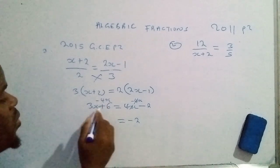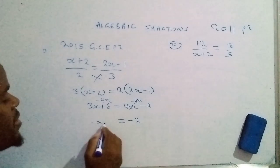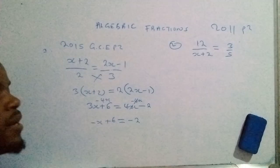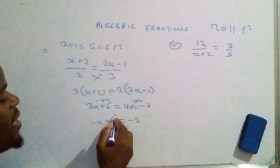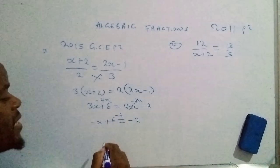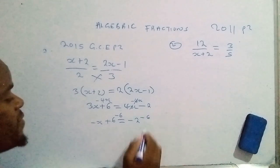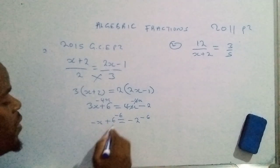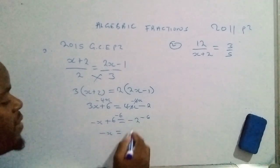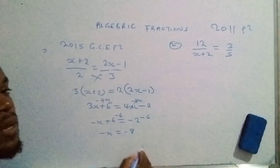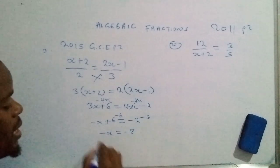This one will give us 3x minus 4x, that's negative x plus 6. So we as well have to get rid of the 6 here by bringing in the additive inverse, which is negative 6, on that side. Negative 6, so these two will cancel, and we're going to have negative x, which equals negative 8 because the signs are the same, so we have to add them.